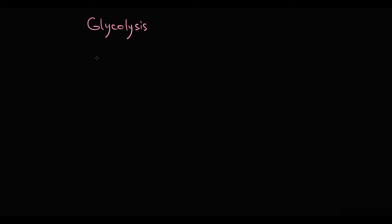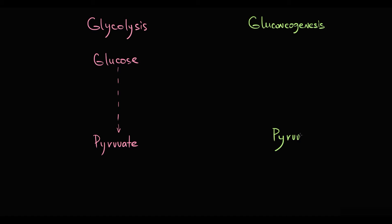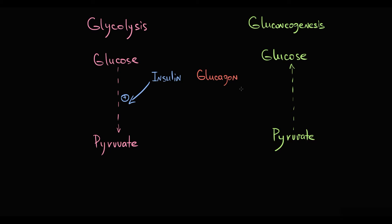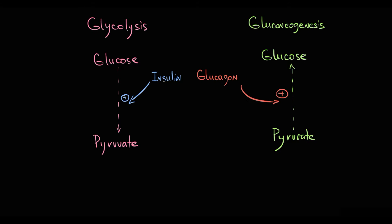In glycolysis, glucose is degraded to pyruvate. In gluconeogenesis, pyruvate is used to produce glucose. Insulin stimulates glycolysis and glucagon stimulates gluconeogenesis. And despite their opposite directions and totally opposite regulation, these two processes have very much in common.